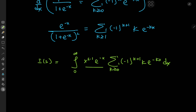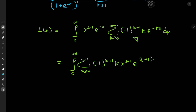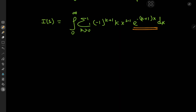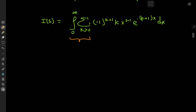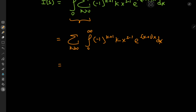Because the x to the s minus 1 and e to the negative x terms are independent of the index variable k, we can slip them inside the summation operator. I can write this as the integral from 0 to infinity of the sum over k of negative 1 to the k plus 1 times k times x to the s minus 1 times e to the negative k plus 1 times x, integrated with respect to x. This damped exponential term ensures that the entire thing is nicely convergent, so we can switch the order of integration and summation and write this as the sum over k of the integral from 0 to infinity of negative 1 to the k plus 1 times k times x to the s minus 1 times e to the negative (k plus 1)x dx.